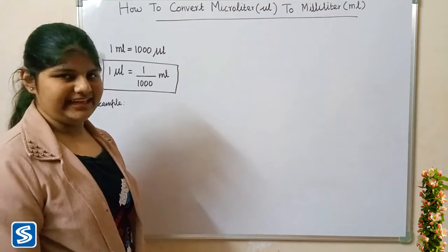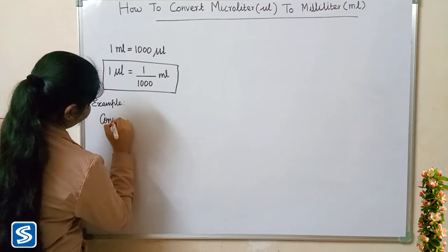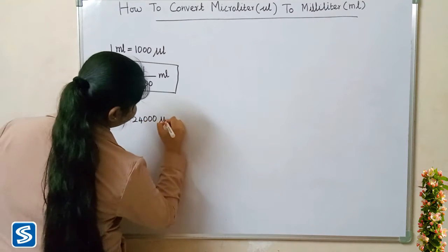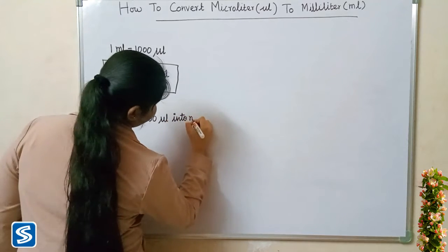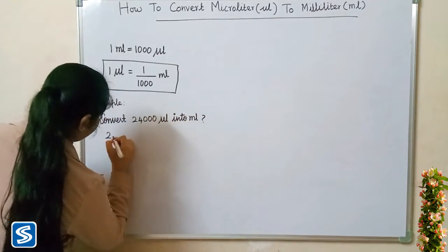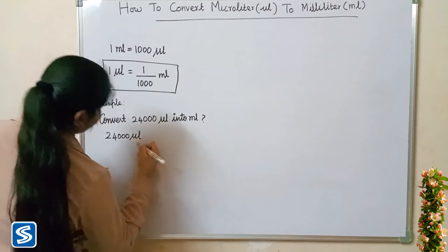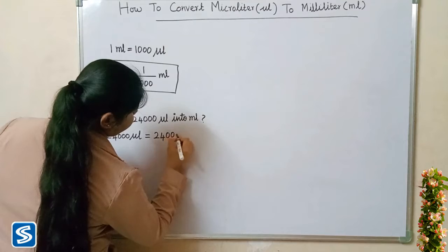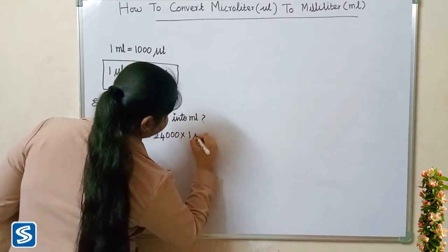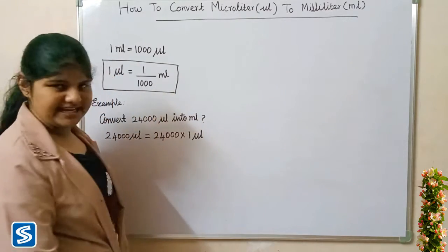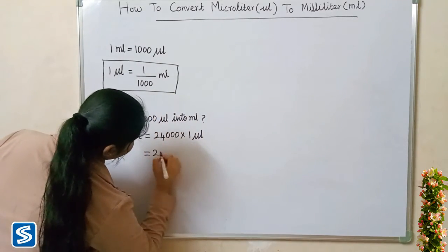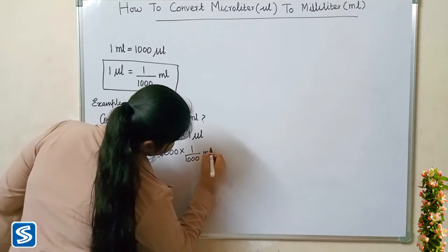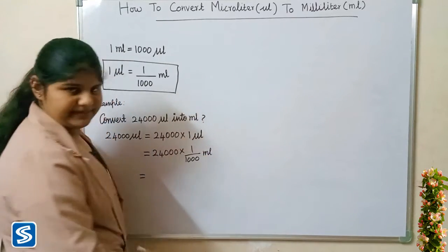For the first example, convert 24,000 microlitres into millilitres. 24,000 microlitres can be written as 24,000 multiply one microlitre. Now we have to substitute one by thousand millilitres in the place of one microlitre, so 24,000 multiply one by thousand millilitres. 24,000 multiply one will be 24,000.